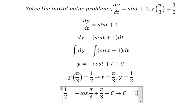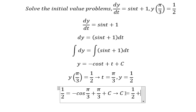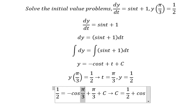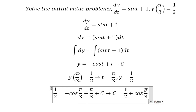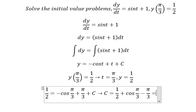So we have C equals 1/2 plus cos(π/3) minus π/3. This gives 1/2 plus 1/2, which equals one minus π/3.